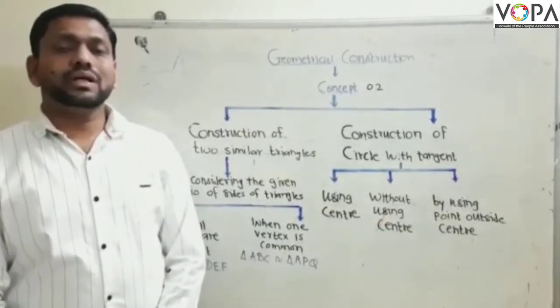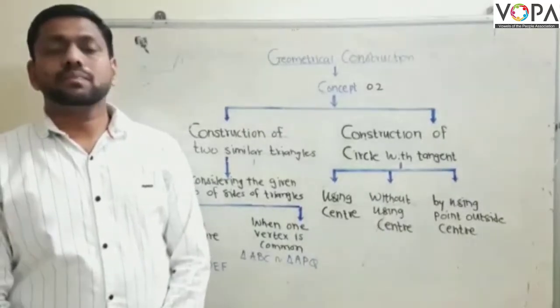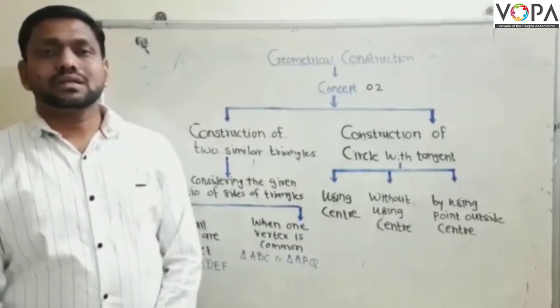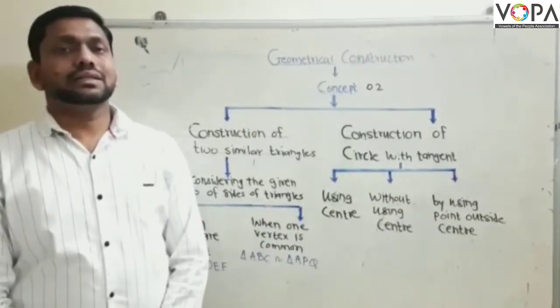Means in this chapter, we discuss two different concepts. The first one, construction of two similar triangles and second one, construction of tangent of a given circle.